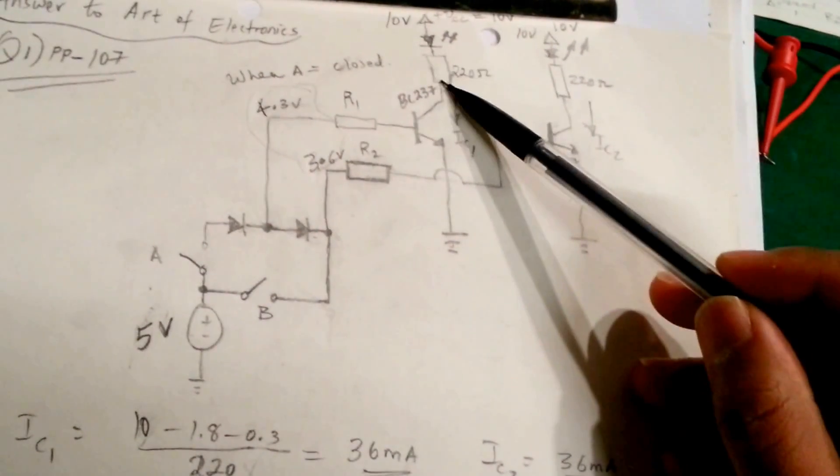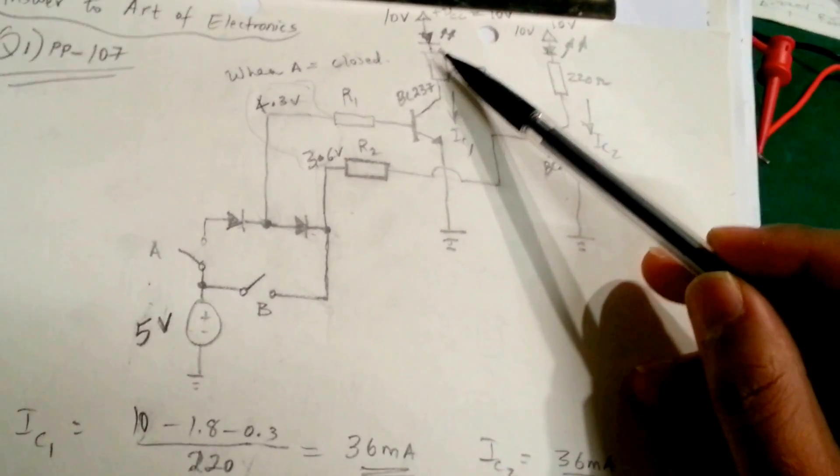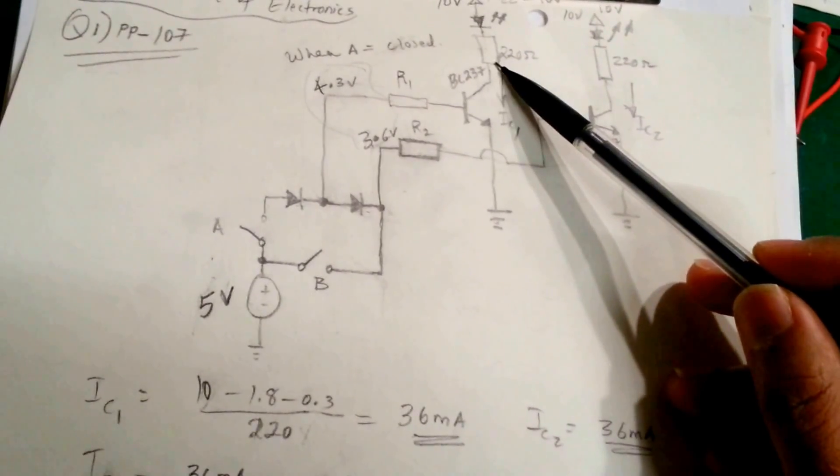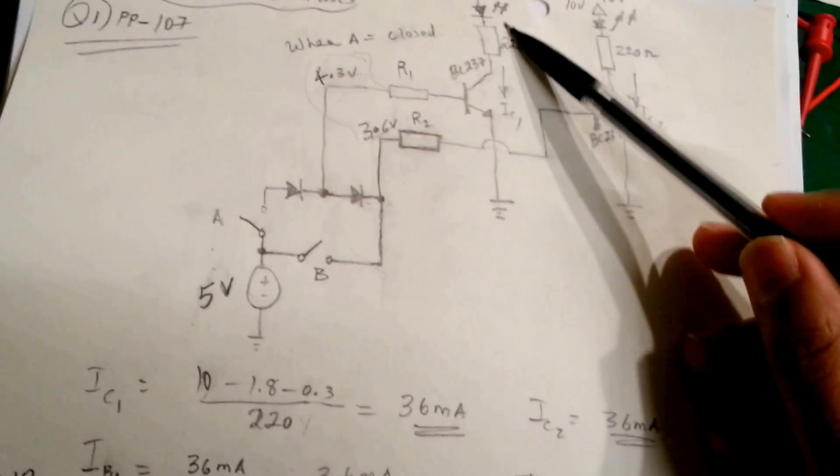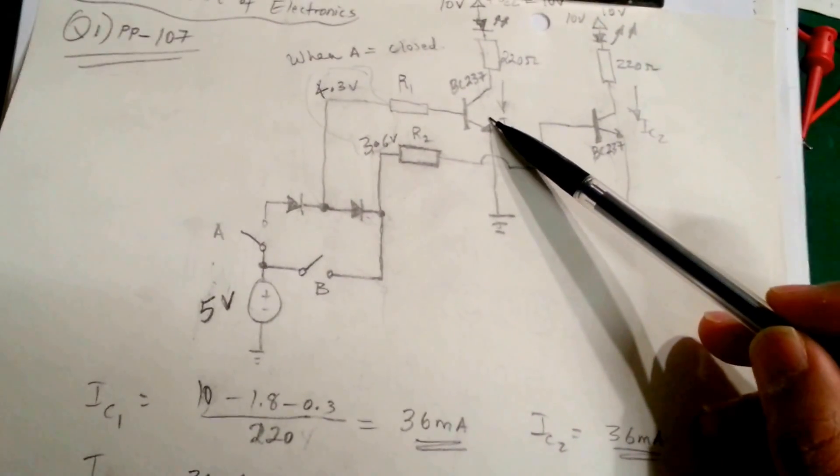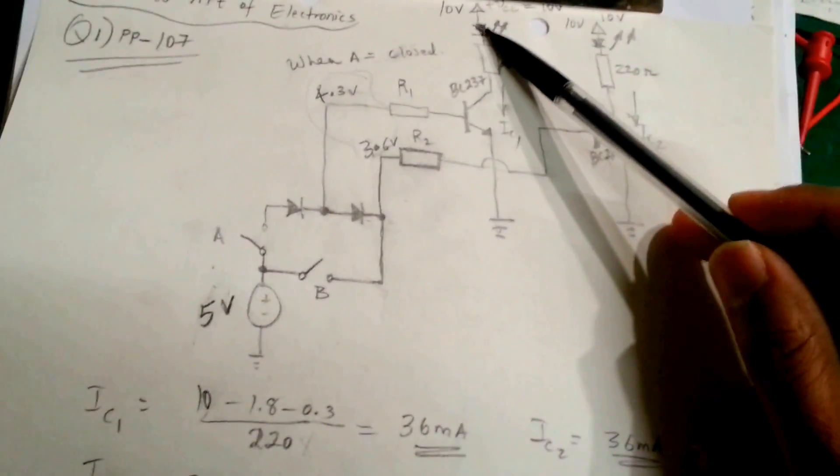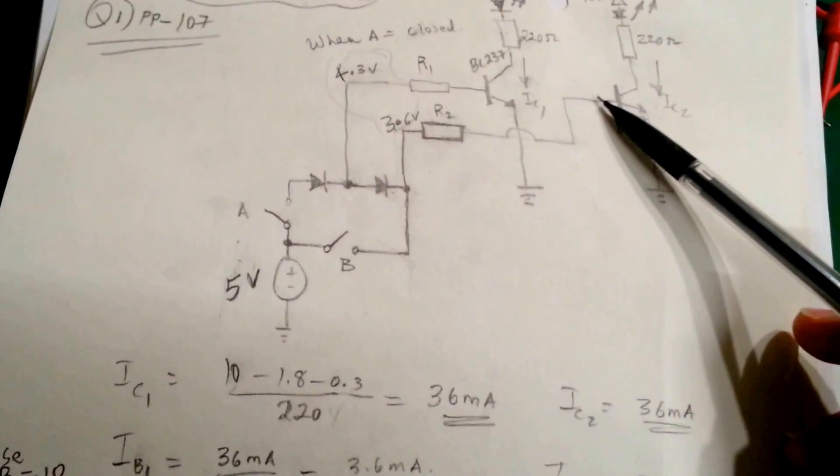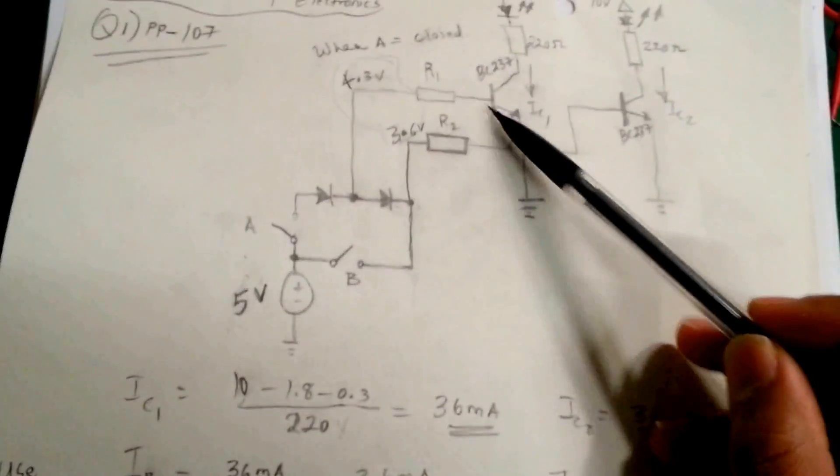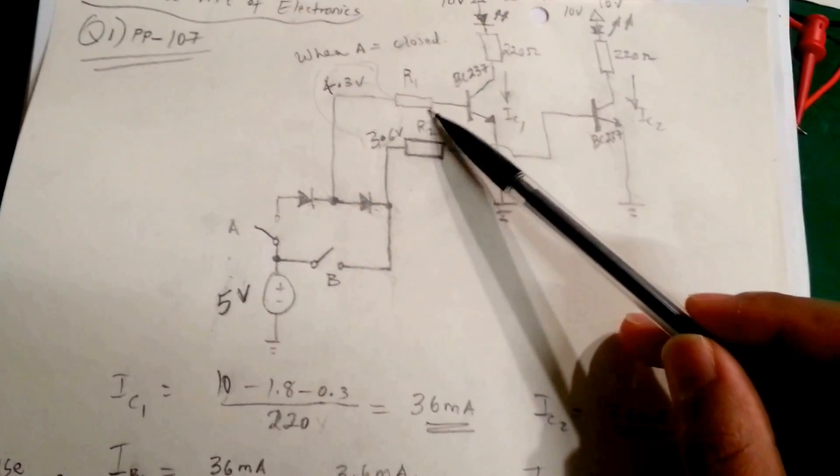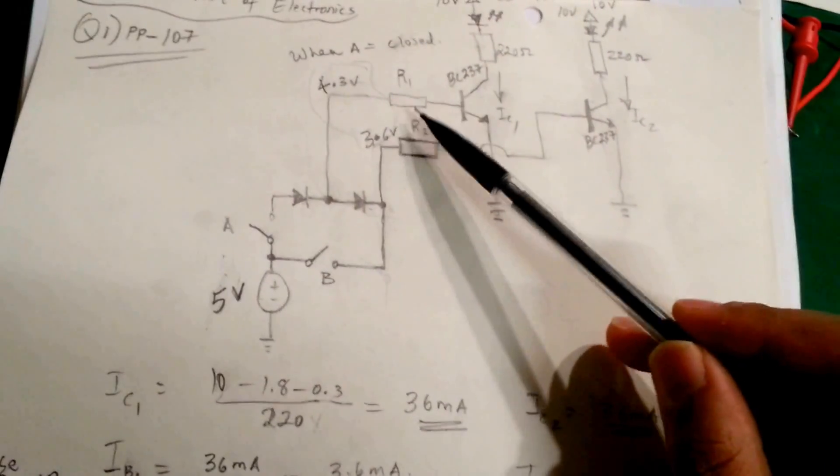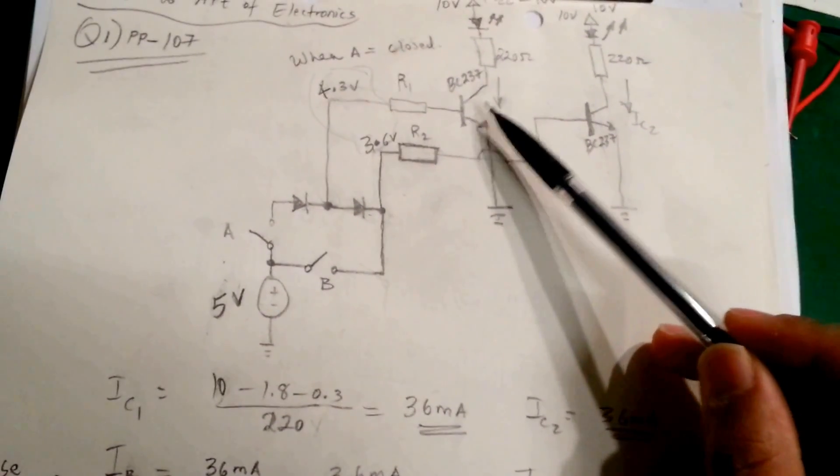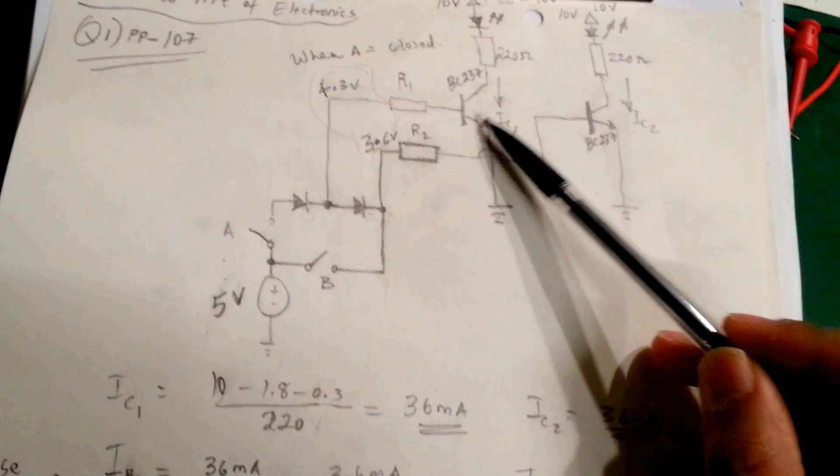So 10 volts minus 1.8 across this LED minus the saturation voltage, divided by the current limiting resistor, you get 36 milliamps of collector current. So when the transistor is switched on completely, which means saturated, there will be 36 milliamps flowing here, the same as well here. Now in order to saturate the transistor, you need to apply a substantial amount of base current because now we are in saturation. So we need to make sure that the transistor gets saturated because you don't want to waste power here, because it's just acting as a switch and the voltage across the switch is zero.